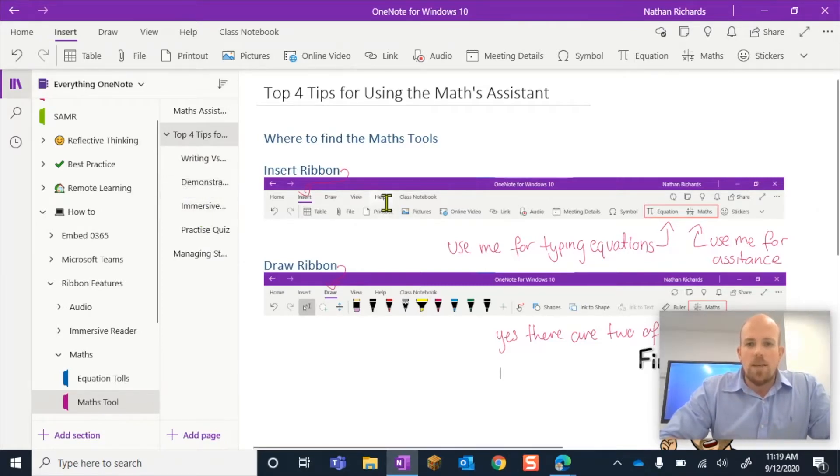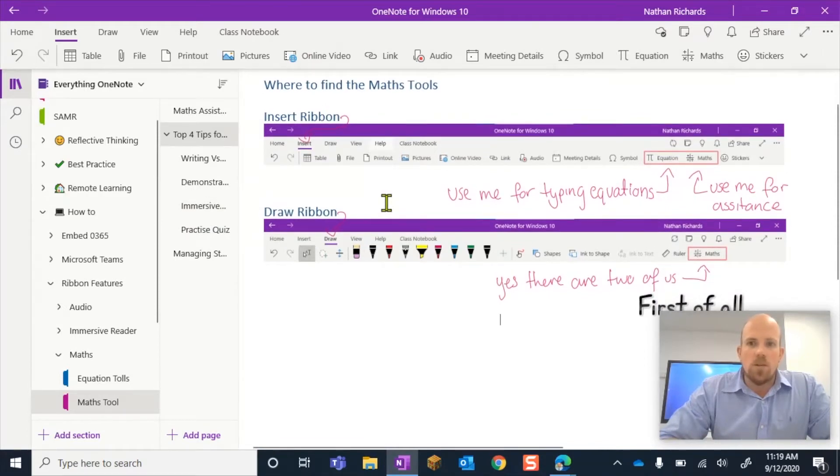Now those four tips will drop down and that's what I'm going to go through with you today. So you can just see here I've just given some little instructions as to what we're going to be looking at and using today. So we're going to be looking at the equation tool and that maths assistant tool combined together and they're found in two different ribbons.